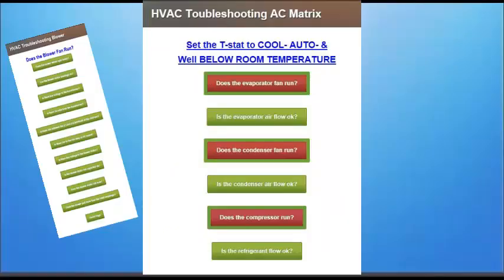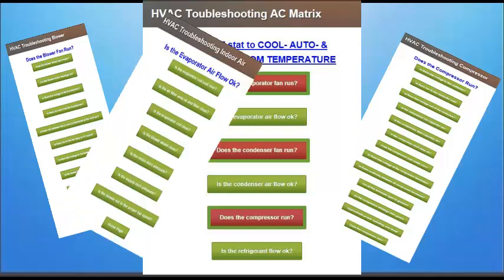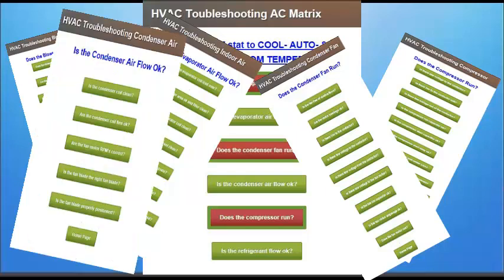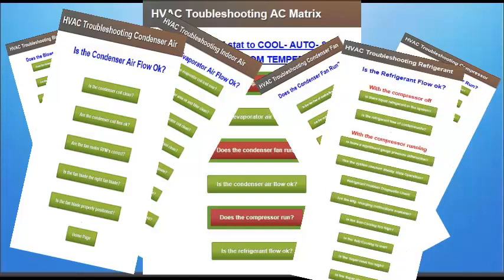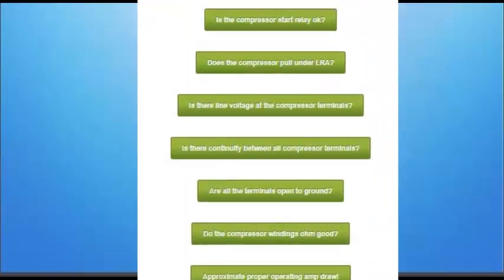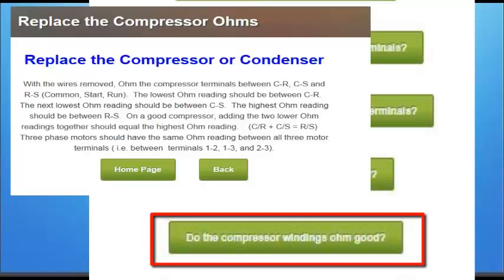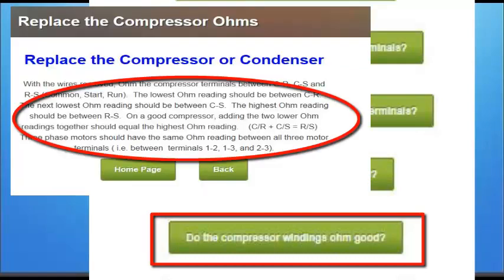Any negative answers prompt another set of questions in the technician's mind. These questions are also mentally prioritized and sequenced in the proper order for the most efficient and effective troubleshooting. Answering any of these secondary questions will involve a subtle shift from the process of troubleshooting to the knowledge necessary to use troubleshooting procedures. For example, in order to determine if the compressor ohms good, the technician must already know at least one ohm test procedure. In this case, the matrix does provide one common ohm testing procedure often used to evaluate compressor windings.